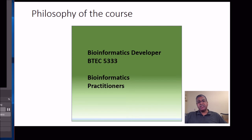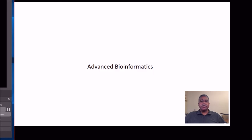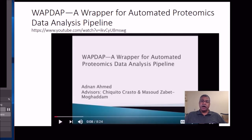At some point, this course title will have to change to reflect developmental bioinformatics. You don't necessarily need to have taken 5322 to take 5333 — they can be taken independently. Now let me give you a quick example of four research projects my students have done, all derived from the development of software.